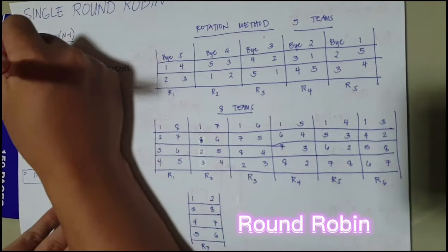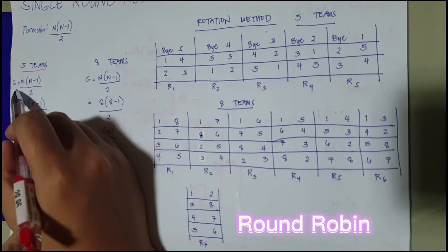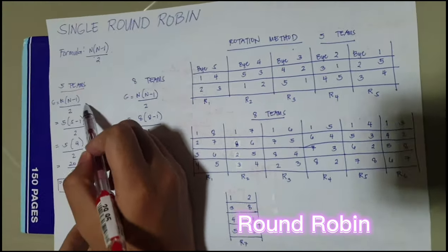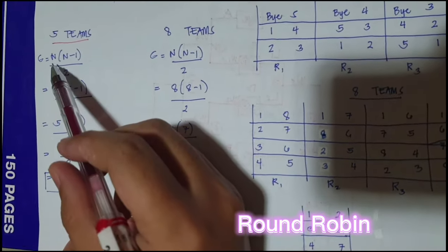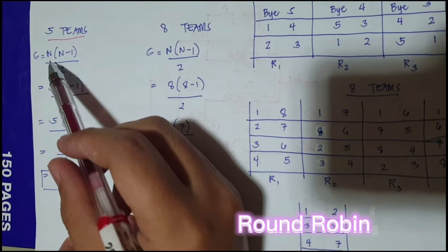So let's say, for example, 5 teams. So g equals n times n minus 1 over 2. So we're going to replace n with 5 since n stands for the number of entries.